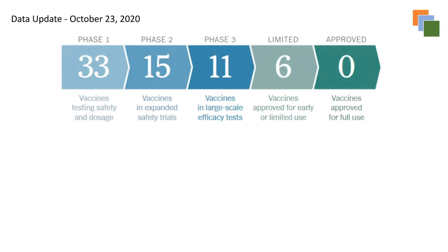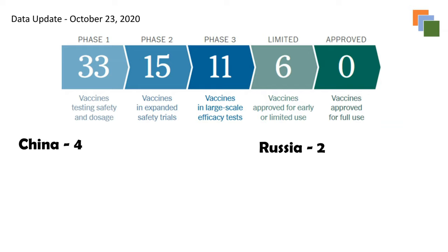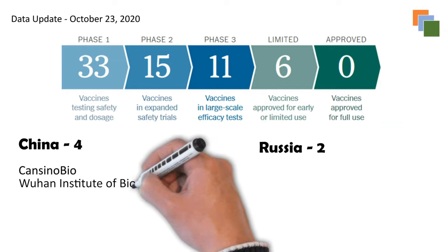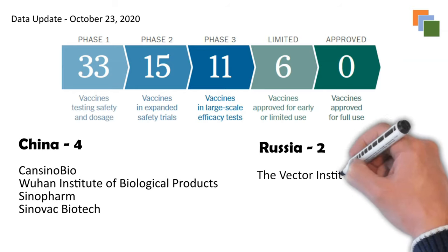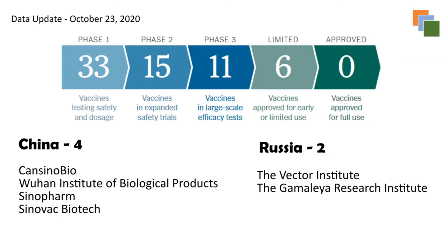As per data collected on October 23rd, 2020, here is where things currently stand: 33 vaccines are being tested in phase one, 15 in phase two, 11 in phase three, and six have received limited approvals. No vaccine has been approved for full public use as of now. Of the six with limited approval, four are from China and two are from Russia. China has approved vaccines from CanSino Bio, the Wuhan Institute of Biological Products, Sinopharm, and Sinovac Biotech. Russia has approved vaccines from the Vector Institute and the Gamaleya Research Institute. Both countries approved vaccines without waiting for phase three results, and experts say this rushed process carries serious risks.